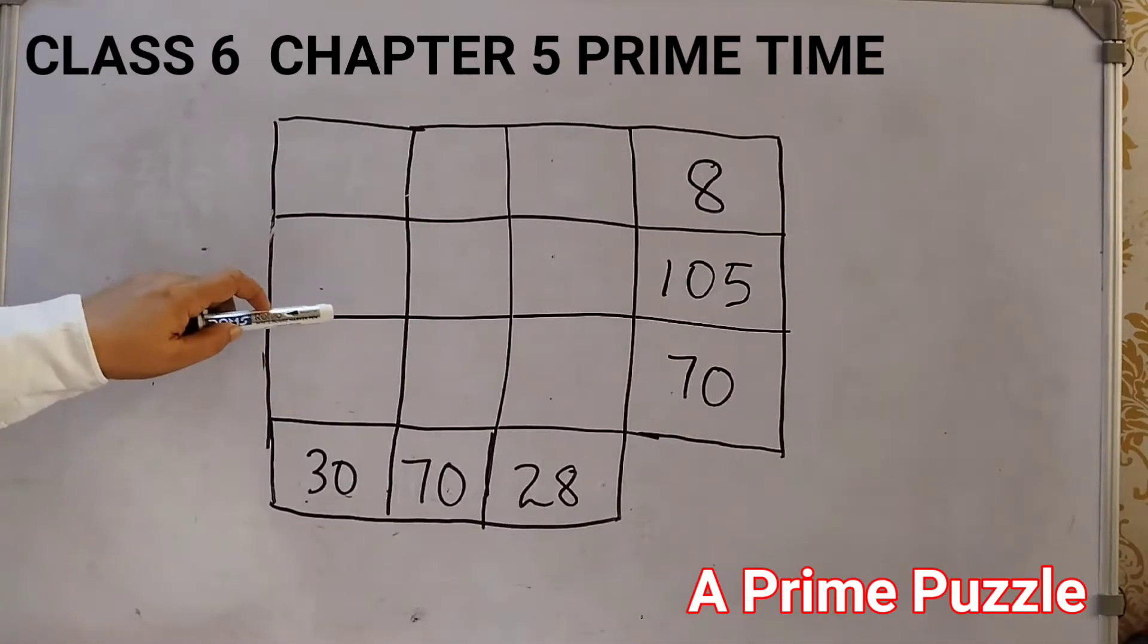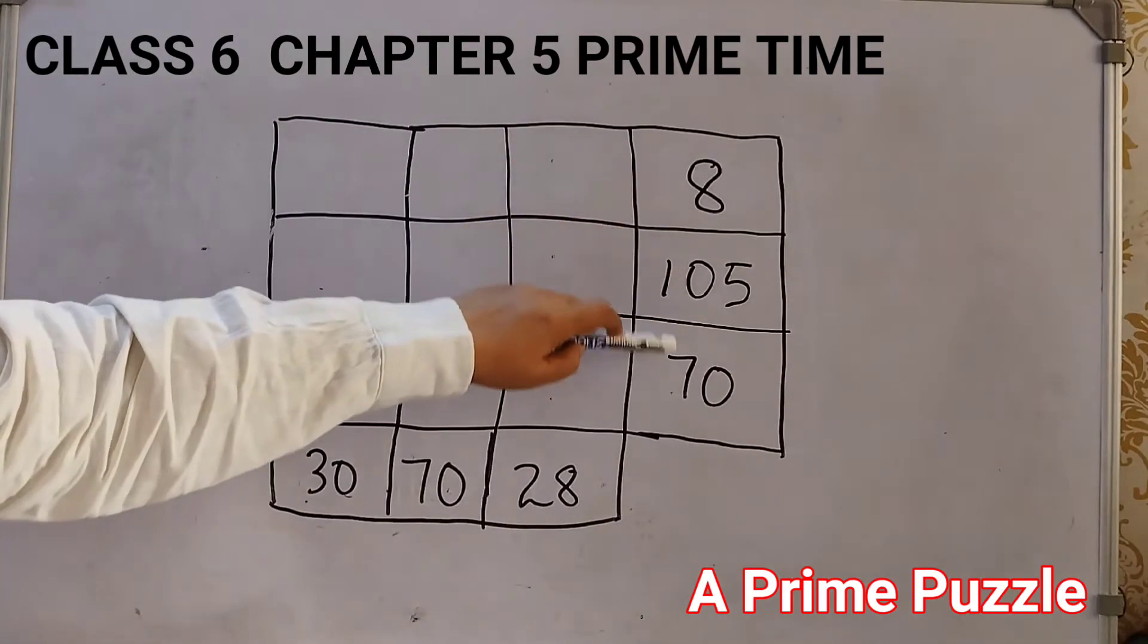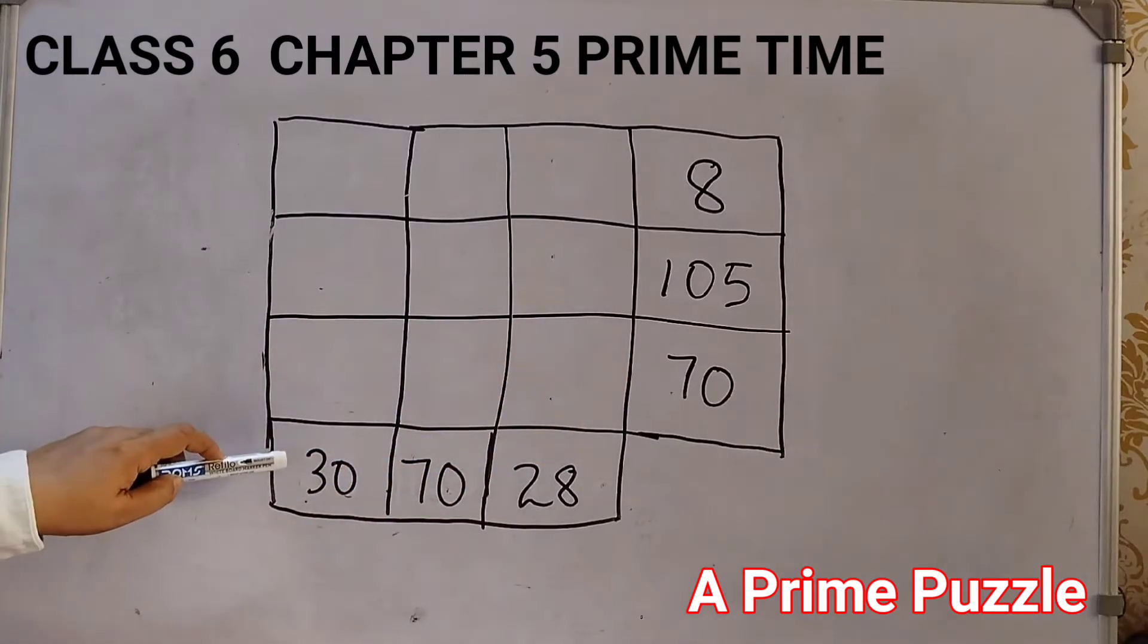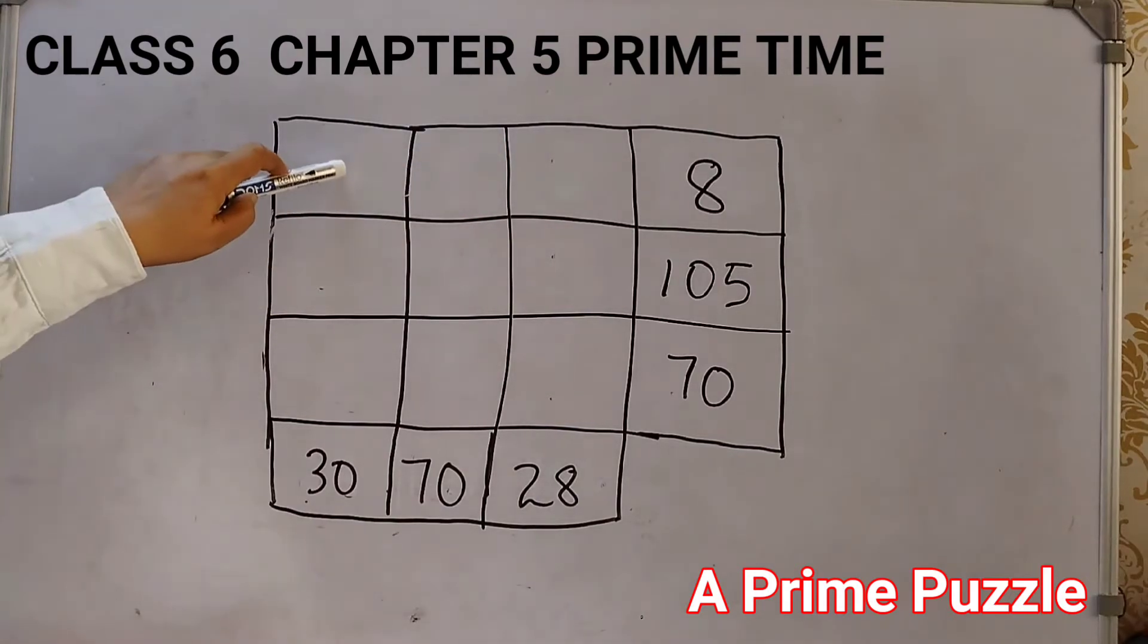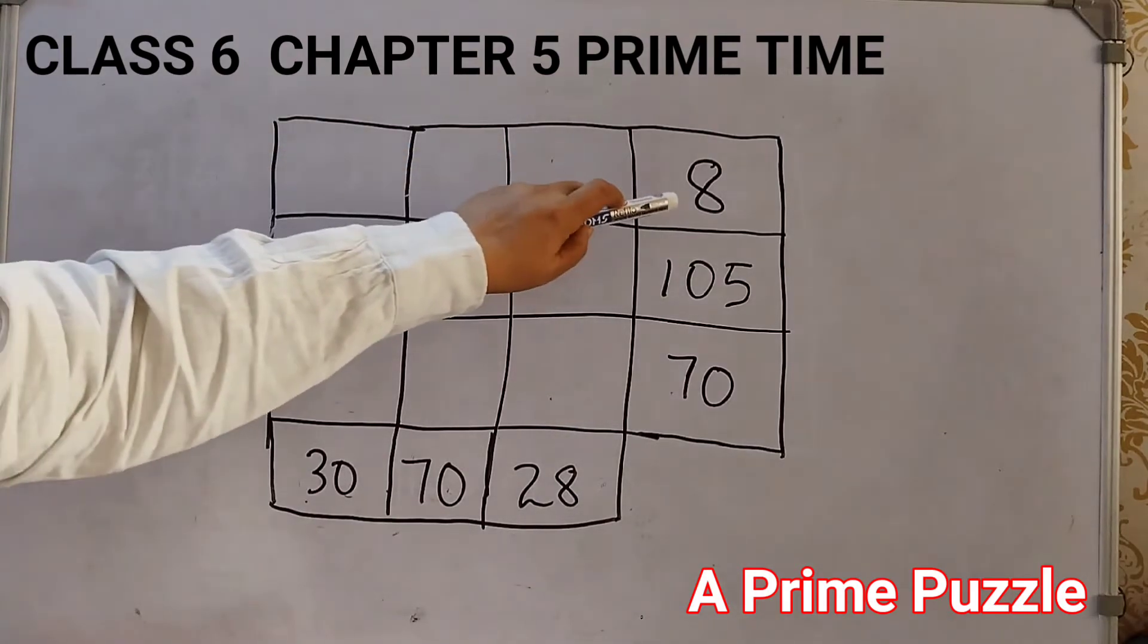So this is the grid given here. We have got some numbers here, three numbers here and three numbers here. The rule is that we need to fill the grid with prime numbers, so that the product of each row when we multiply these three numbers we must get 8.